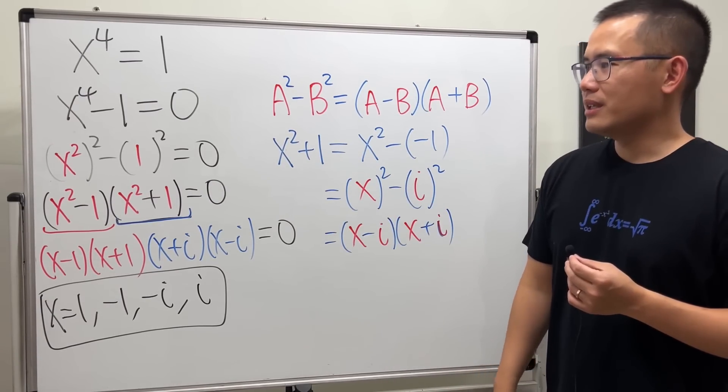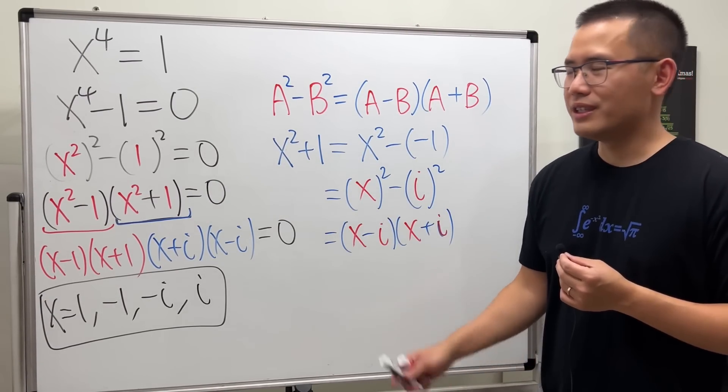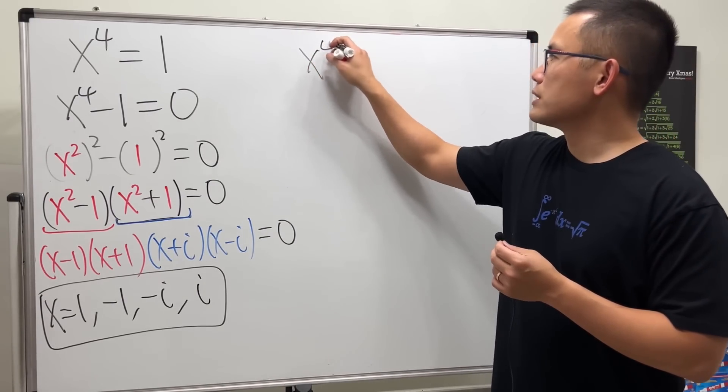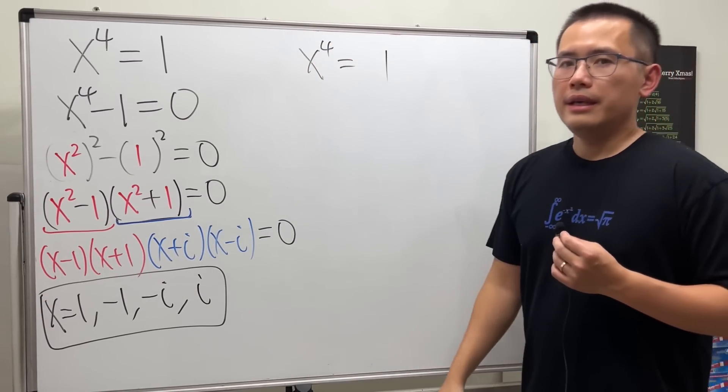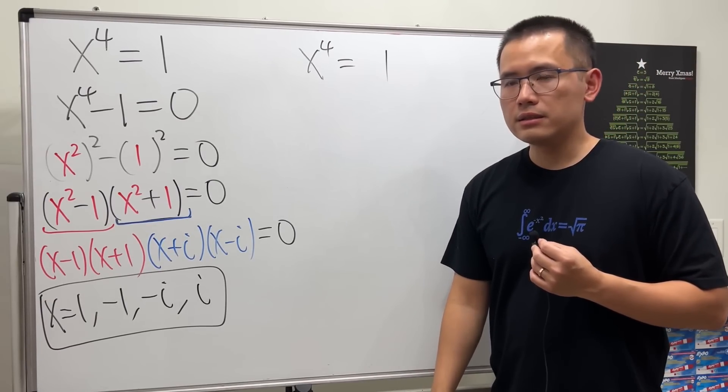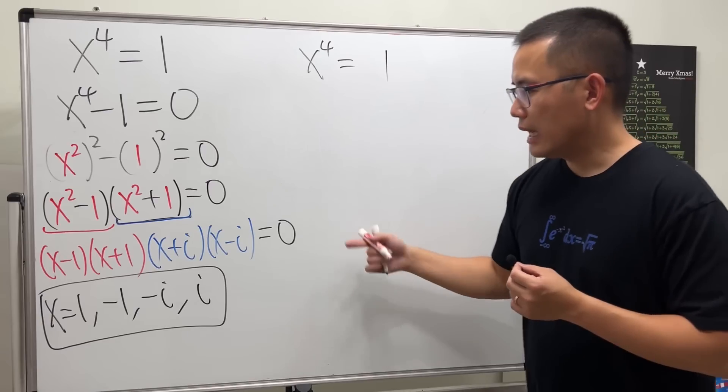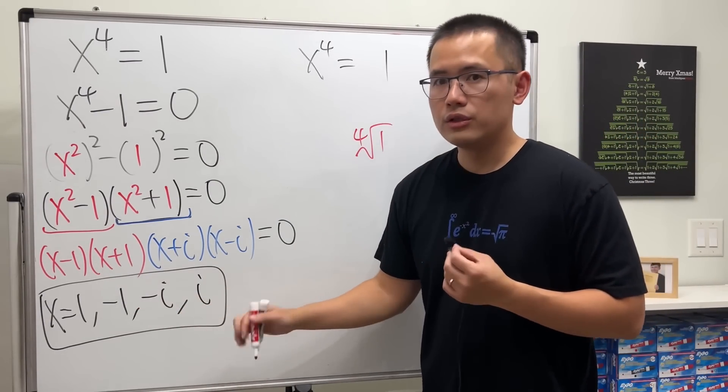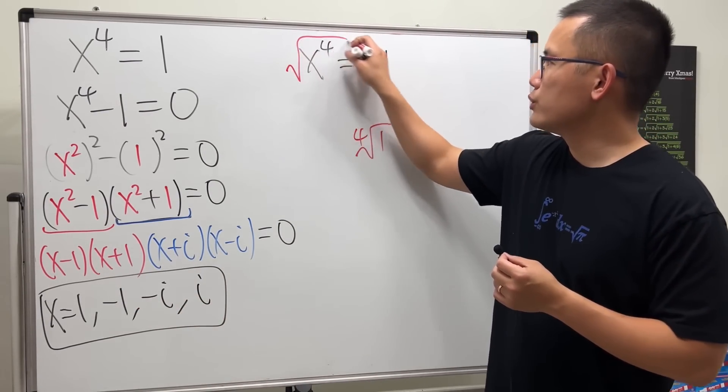Is there another way to do it? Yes, there are actually two more ways. Let me show you another way. We have x to the fourth power equal to 1. Instead of taking the fourth root to both sides, because if I do that, I don't know how to go from the fourth root of 1 to these.